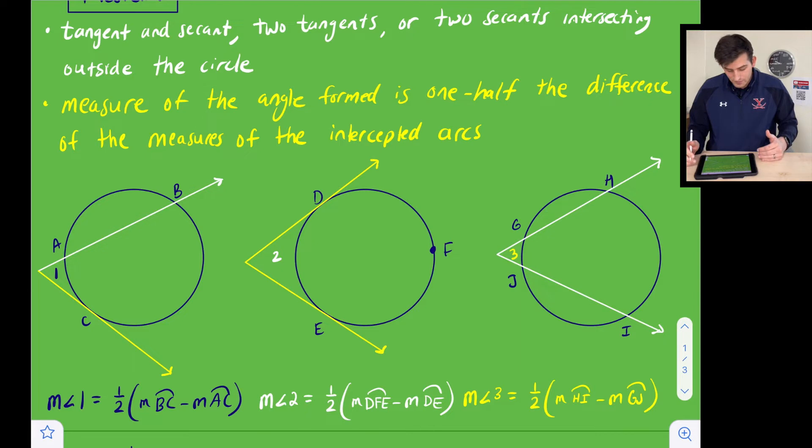So our first one here, we have a tangent, which is in yellow, and we have a secant, which is in white. So to find the measure of angle one, we look down here, and we would just take half of the difference of arc BC and arc AC. So we're going to subtract in that order. So measure of arc BC minus the measure of arc AC, we'll take half of that, and that'll give us the measure of angle one.